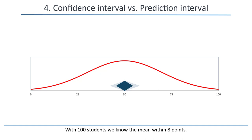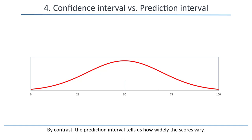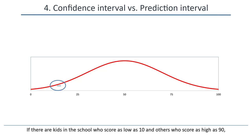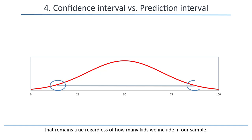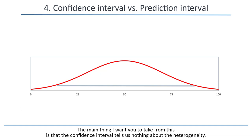By contrast, the prediction interval tells us how widely the scores vary. And as such, it's driven primarily by the actual distribution of scores in the population. If there are kids in the school who score as low as 10 and others who score as high as 90, that remains true regardless of how many kids we include in our sample.